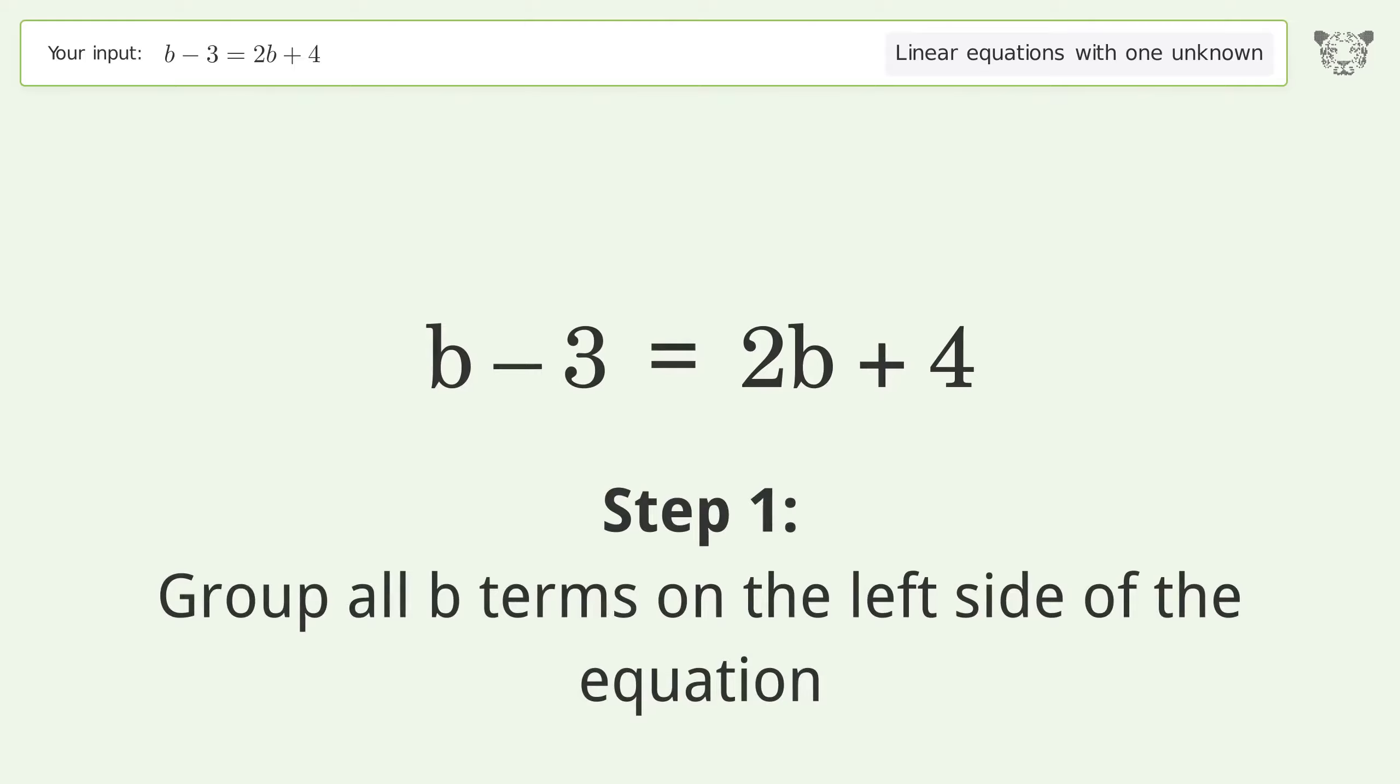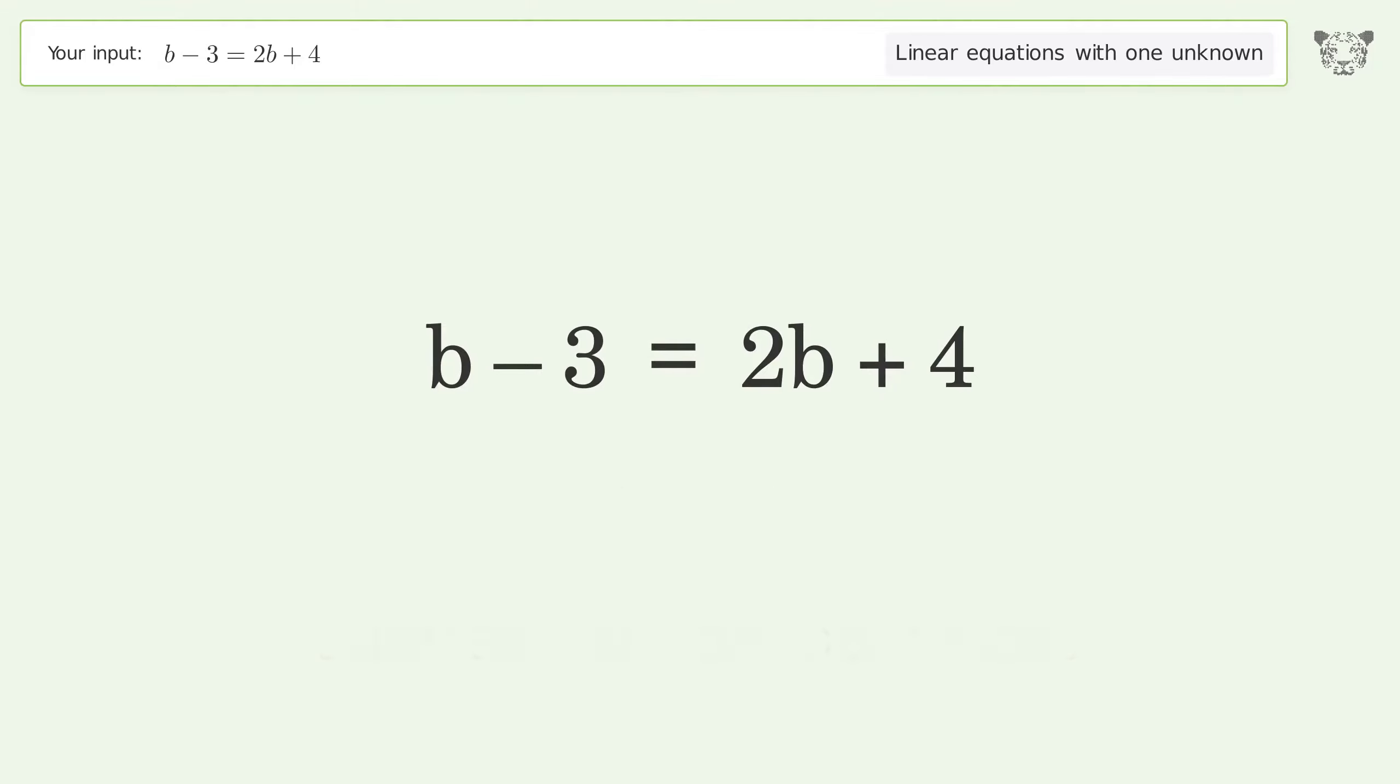Group all b terms on the left side of the equation. Subtract 2b from both sides. Group like terms. Simplify the arithmetic.